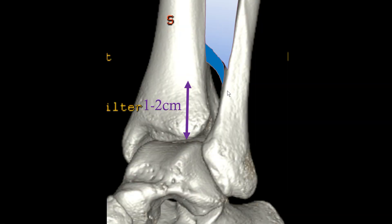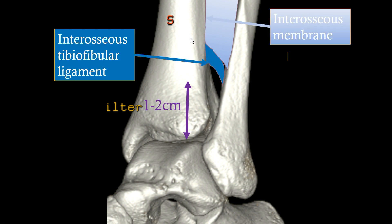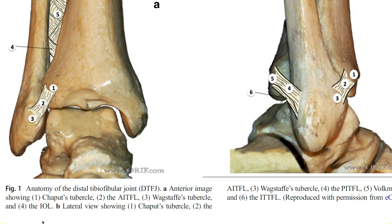The third component is the interosseous tibiofibular ligament, running from the tibia to the fibula in an oblique orientation from proximal to distal, and everything above it is the interosseous membrane. Keep in mind that in some references the orientation of this ligament is described the other way around — I think that is a mistake. In one of the most recent publications in skeletal radiology the orientation shown is basically wrong, and I will show you in a real patient how the orientation should look.